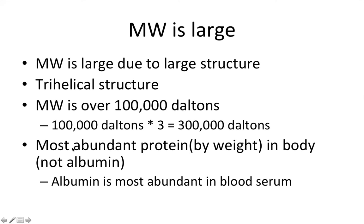Collagen is the most abundant protein by weight in the body — but be careful here. Albumin is the most abundant protein in the blood serum. You have to be very meticulous when reading these questions, always approaching them with the mindset of how they might be trying to trick you.